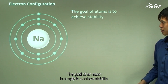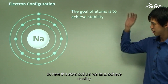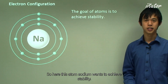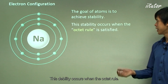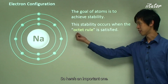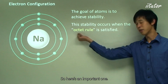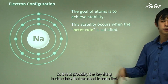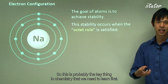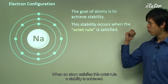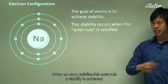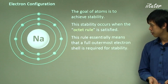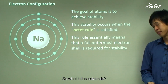The goal of an atom is simply to achieve stability. This stability occurs when the octet rule is satisfied — this is probably the key thing in chemistry we need to learn first. When an atom satisfies the octet rule, stability is achieved. So what is the octet rule?